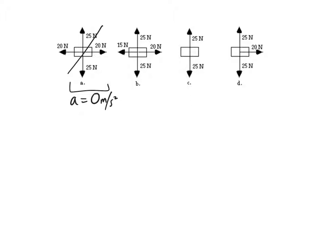Same thing with C. Her acceleration has got to be zero because she's balanced. So both of those are out of the running. That leaves us with B and D.